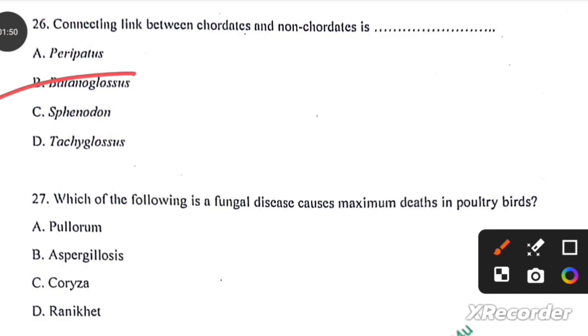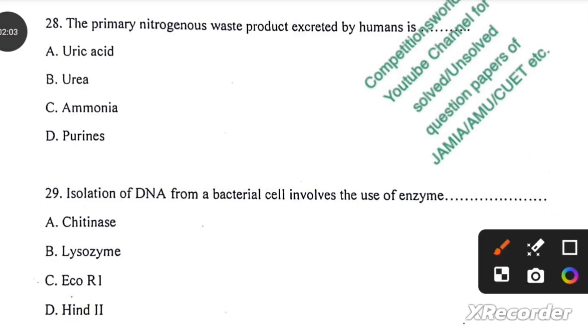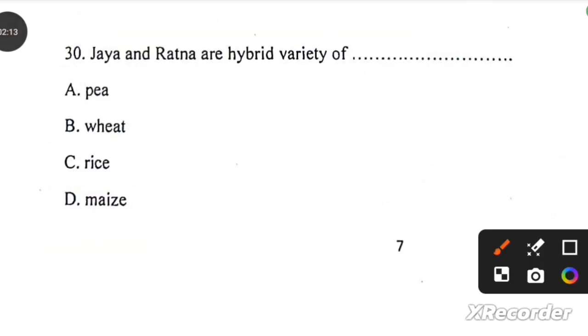Which of the following is a fungal disease causes maximum deaths in poultry birds? Isertransrap, option B. The primary nitrogenous waste product excreted by humans is urea. Isolation of DNA from bacterial cell involves the use of enzyme lysozyme. Jaya and Ratna are the hybrid variety of rice.